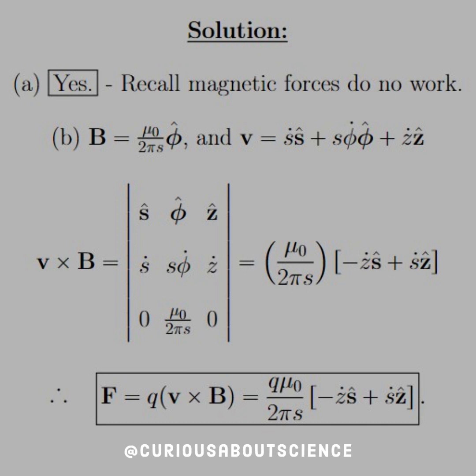For part B, we know that from Ampere's law we can find the magnetic field, which is mu naught over 2 pi s in the phi hat direction. And V, which is the cylindrical velocity, is s dot s hat plus s phi dot phi hat plus z dot z hat.